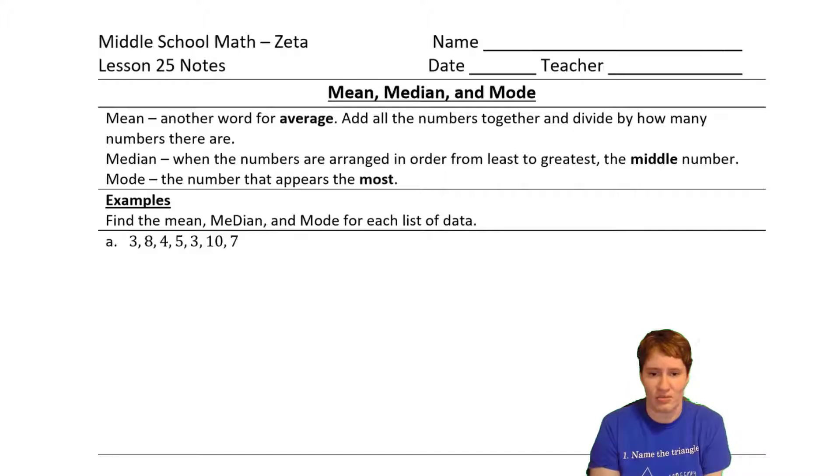And so to find the average of a set of numbers, we take all the numbers we have, we add them together, and then we divide by how many numbers there are. One of the most common places that we see averages is when we talk about grades in school, that whatever grade you get in a class has come from some sort of average. A lot of times, it's more complicated than just adding up all your grades and dividing by a number. But the idea is there.